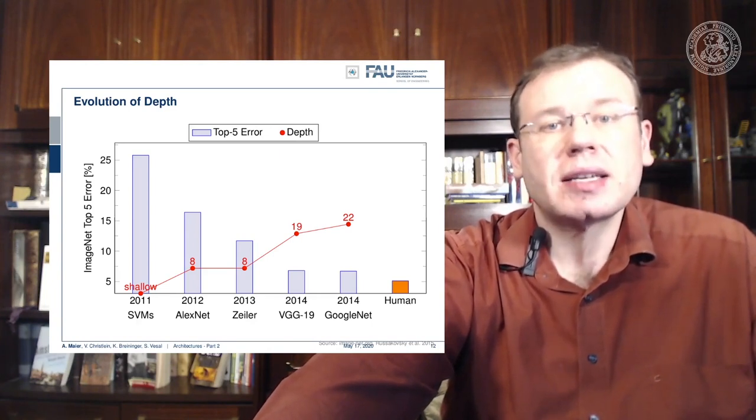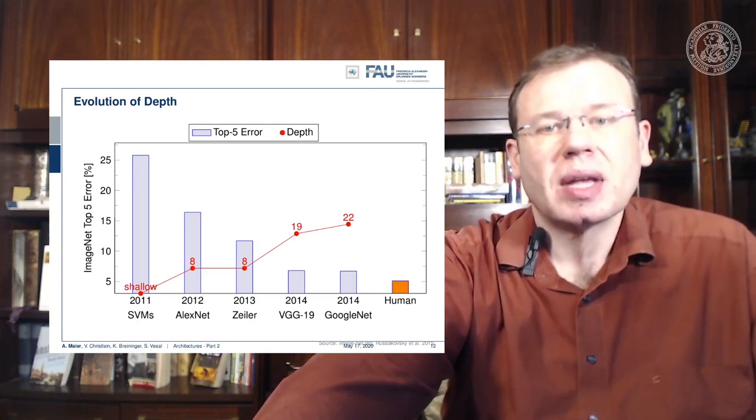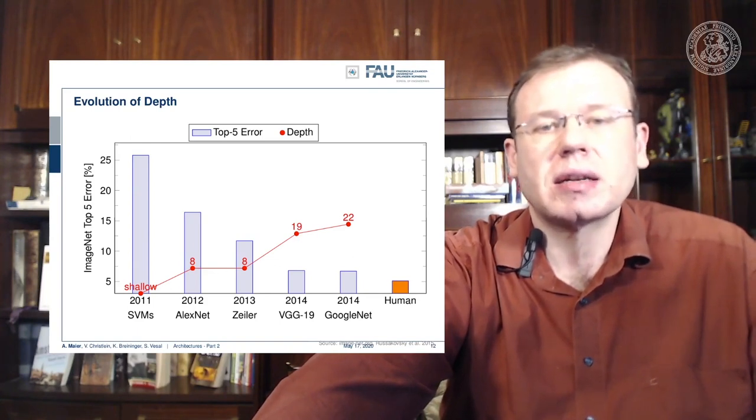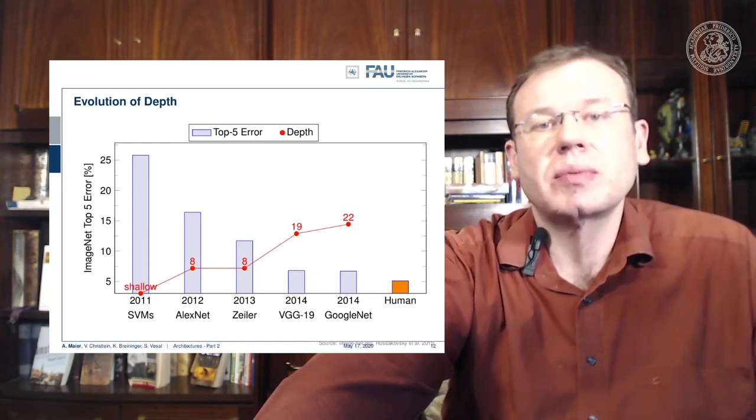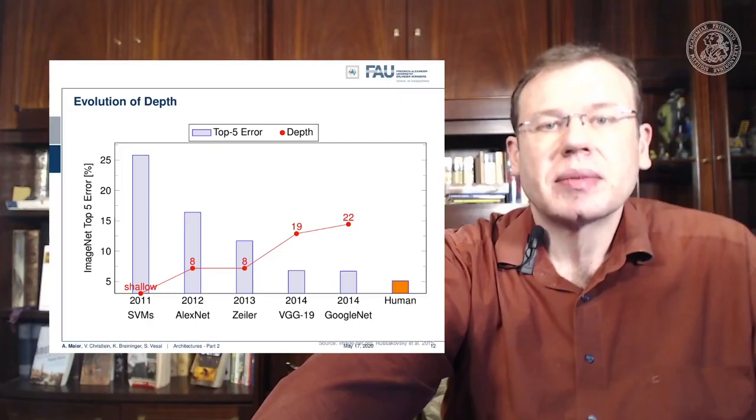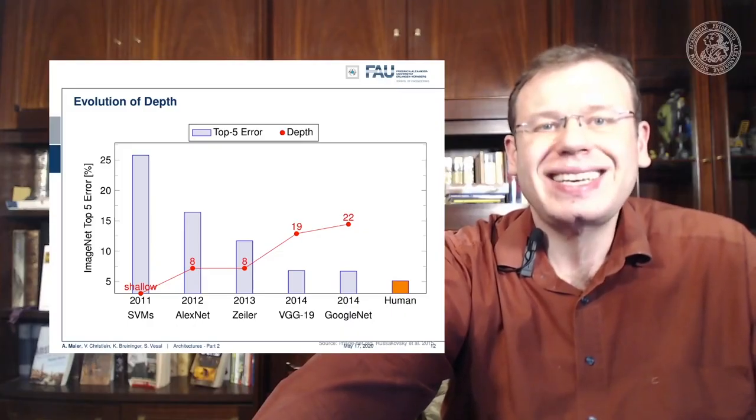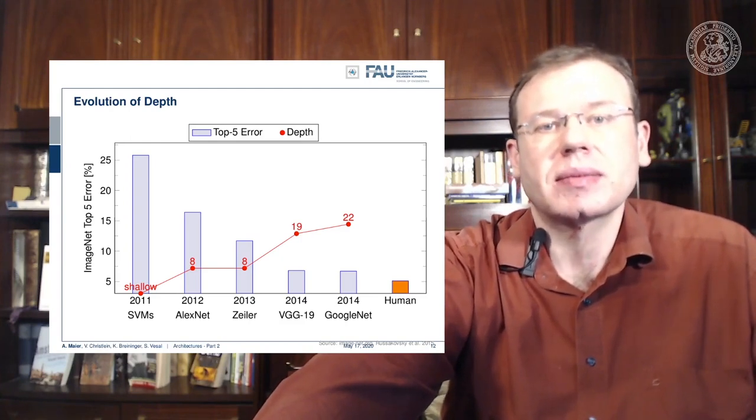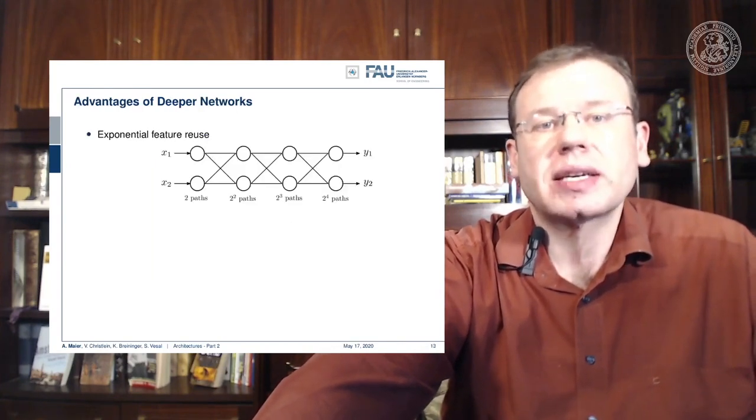the depth, the better seemingly the performance gets. We can see there's only a little bit of margin left in order to beat human performance. The humans are a low bar to exceed. Depth seems to be a key role in building good networks. Well, why could that be the case?